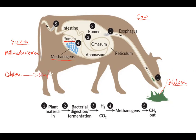Once cellulose is digested, it is turned into simple molecules. One of the byproducts of this digestion is CH4 (methane), another byproduct is hydrogen, and another byproduct is carbon dioxide.